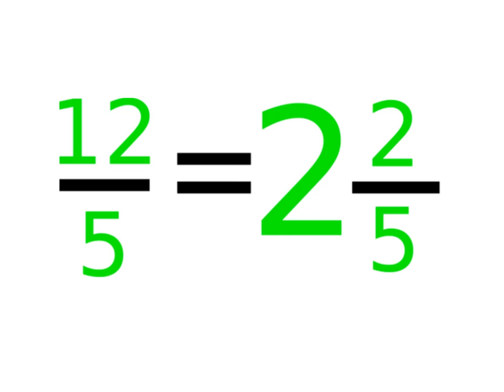This is a top heavy fraction and how we convert them into mixed numbers. We call it a mixed number because we've got a number there and a fraction beside it. Mixed numbers, top heavy fractions—because the number at the top is bigger than the number at the bottom.